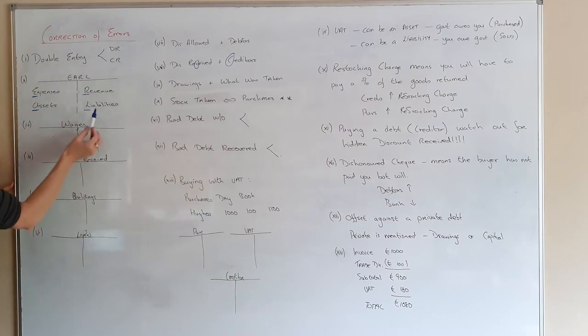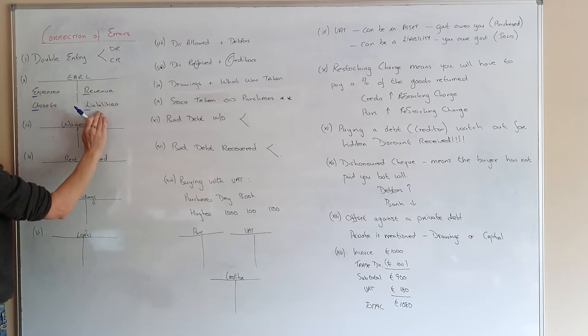Now, each one of these belong on a different side. So expenses and assets belong on the debit side. Revenue and liabilities belong on the credit side.